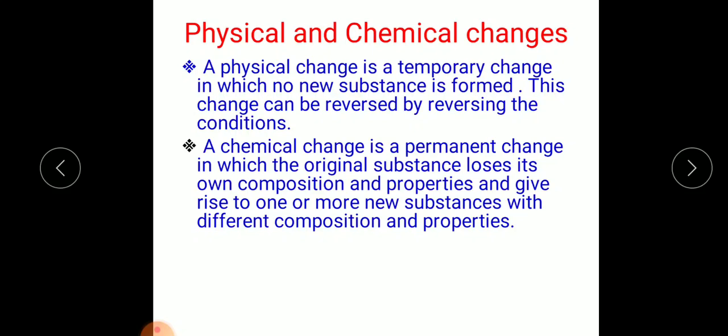A chemical change is a permanent change in which the original substance loses its own composition and properties and gives rise to one or more new substances with different composition and properties. For example, burning of magnesium in presence of oxygen to form magnesium oxide is a chemical change because a new substance is formed which is completely different from the reactants.